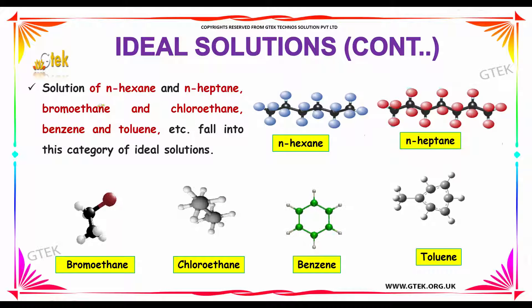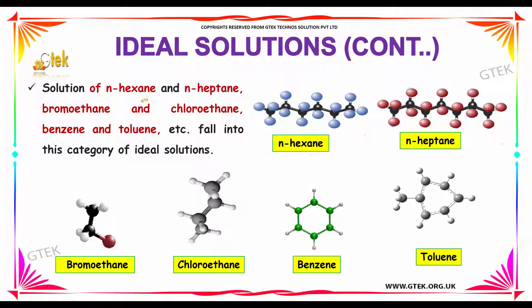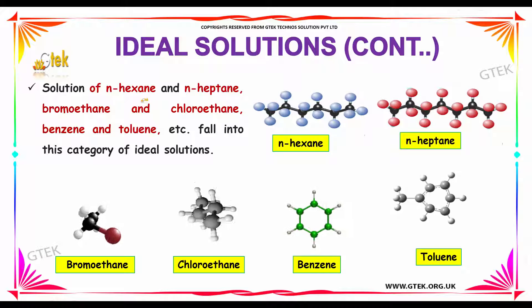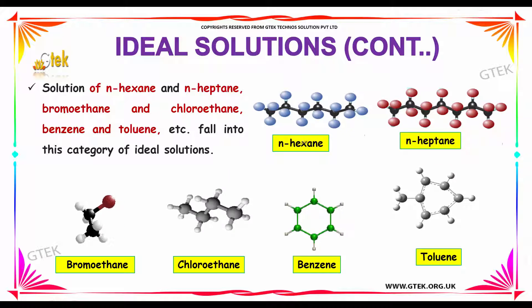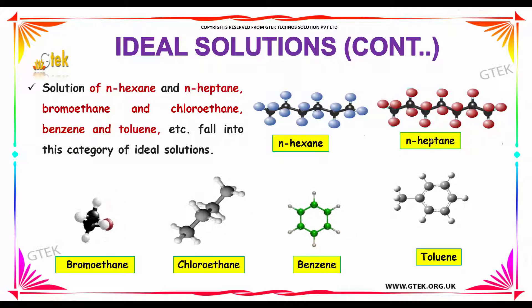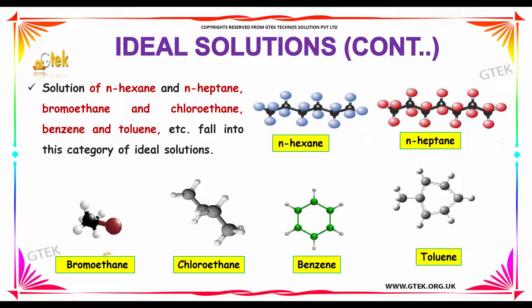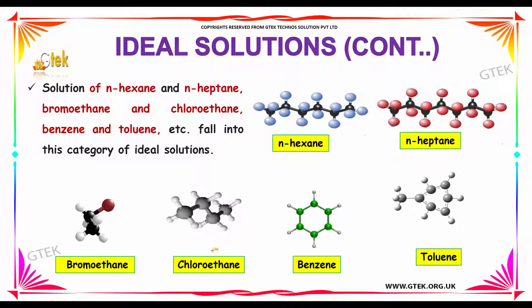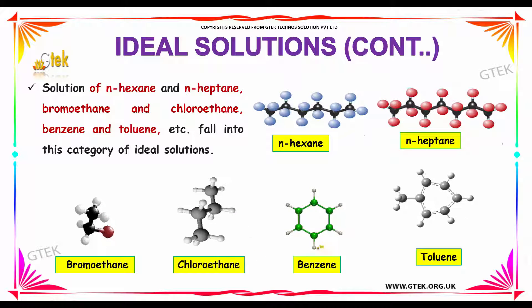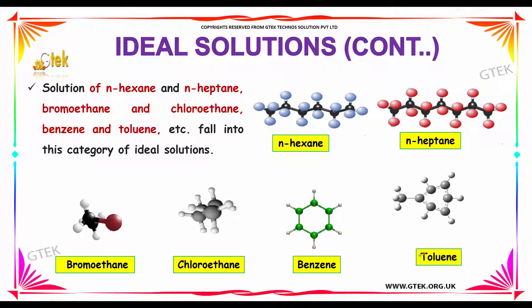Examples of nearly ideal solutions include n-hexane and n-heptane, as well as bromomethane and chloroethane, and benzene and toluene.